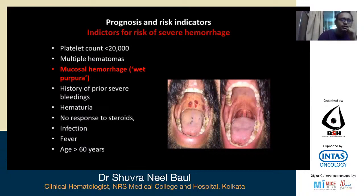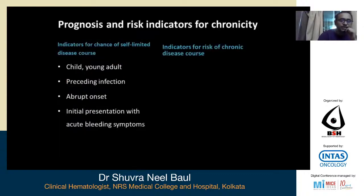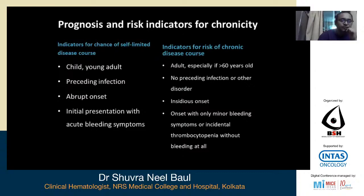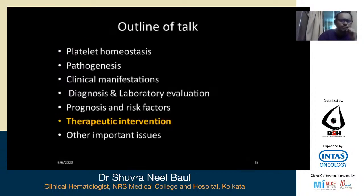For prognosis and risk factors, indicators for severe hemorrhage in newly diagnosed ITP include: platelet count less than 20,000; multiple hematomas; wet purpura; history of prior severe bleeding; hematuria; no response to steroids; infection or fever; and age more than 60 years. Indicators for chronicity: children and young adults with a preceding infection, abrupt onset, and acute bleeding symptoms have a better chance of a self-limited course. Chronicity is more likely in adults over 60 with no preceding infection, insidious onset, only minor bleeding, or incidental thrombocytopenia without bleeding.